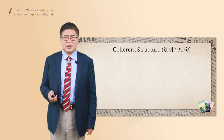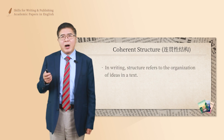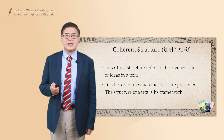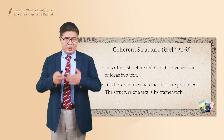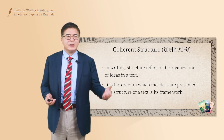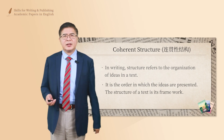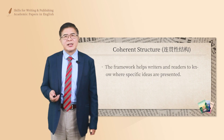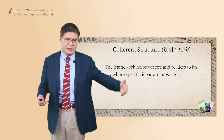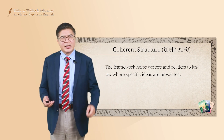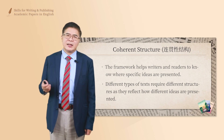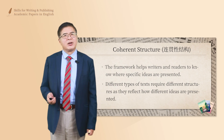What is coherent structure? Basically, it means the organization of ideas in the text — the order in which ideas are presented — and the structure of the text is its framework. How the sentences are structured, how the paragraphs are constructed: there is a topic sentence, the body part, the transition words. The framework helps the writers and readers to know where specific ideas are presented, so we see the flow of thoughts and know what to expect for the next step. Different types of text require different structures as they reflect how different ideas are presented. Taken together, that's called coherent structure.